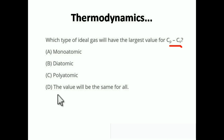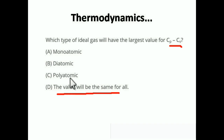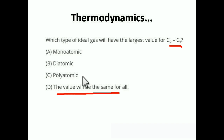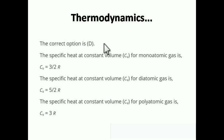Since CP minus CV equals R, the value will be the same for all gas types. There are three types: monatomic, diatomic, and polyatomic — but CP minus CV equals R for all of them. So the correct answer is D: the value is the same for all. However, the individual CP and CV values for each type are very important to know.